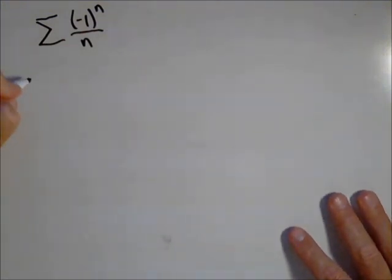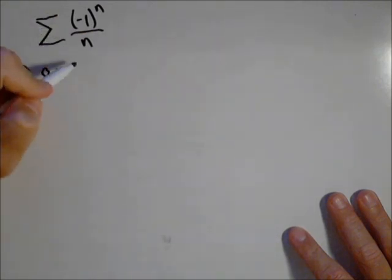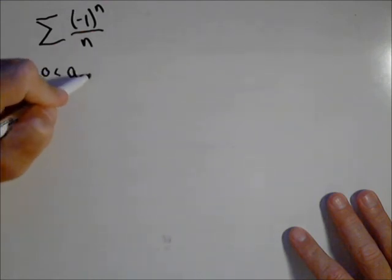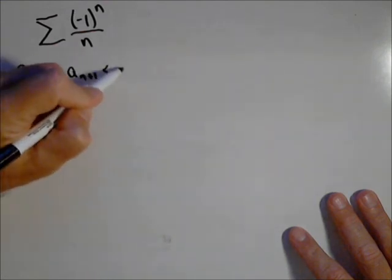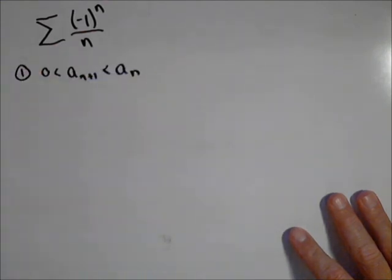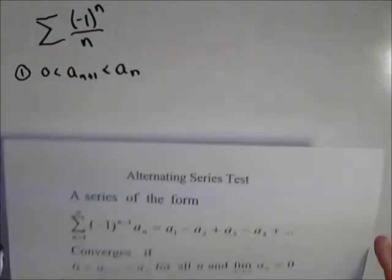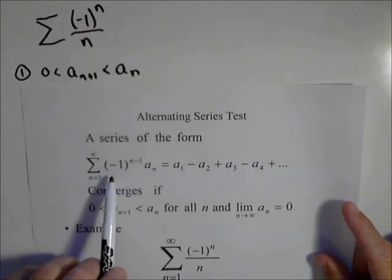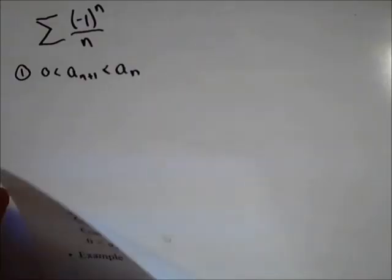The alternating series requires two things. One, we have to have all positive terms for what the a sub n part is. The a sub n part is the part that does not include the alternating piece. So the way it's written up, if you remove the alternating piece, a sub n is what you have.